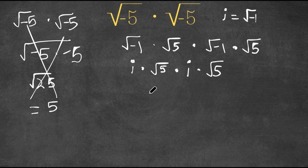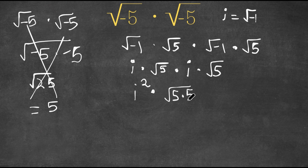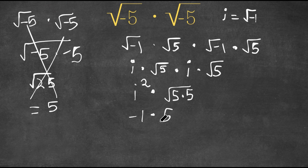Now we can multiply both i's, giving i squared times the square root of 5 times 5. Since i equals the square root of negative 1, i squared equals negative 1. And the square root of 5 times 5 is simply 5. So now I have negative 1 times 5, which is equal to negative 5.